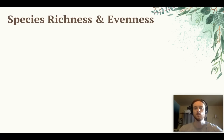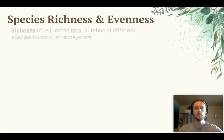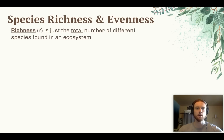There are two different ways of measuring species diversity: richness and evenness. Species richness, which we denote with an R, is simply the total number of different species found in a given ecosystem.